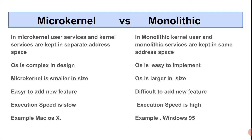Microkernel is complex in design — its address spaces and services are divided, making the design very complex. Monolithic kernel, on the other hand, is easy to implement because everything is handled at one place with the same address space, making it straightforward to implement.